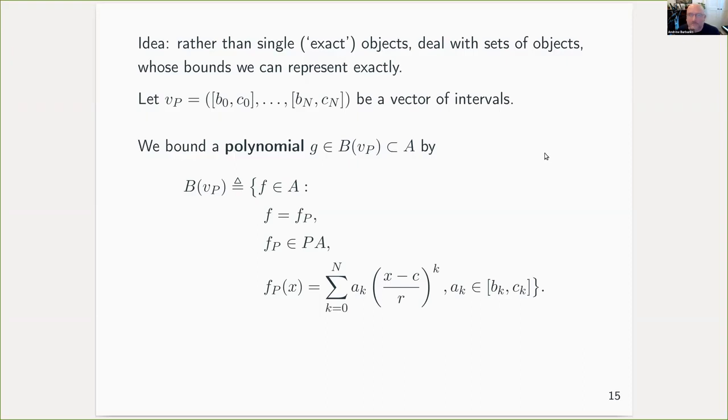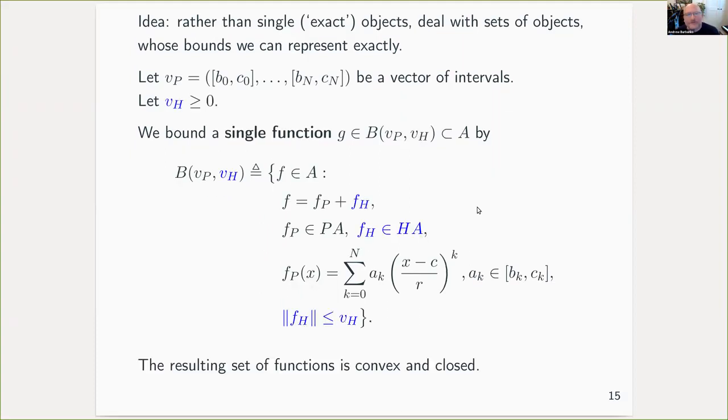For example, if I have a polynomial from the polynomial part of my space that I want to represent, I could bound it with a vector of intervals. And then it lies within the set of functions that can be written down as a polynomial with coefficients lying within our intervals. So I've abandoned dealing with the polynomial exactly and settled for dealing with this set specified by a set of intervals. What about more general functions in our space that have high order parts? Well, we can just add on an extra bound, this VH component, an extra upper bound on a high order function FH that bounds its norm.